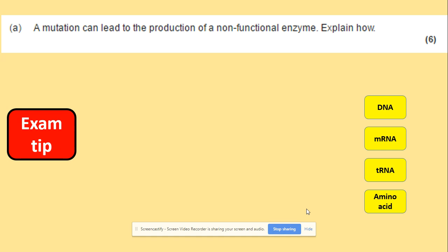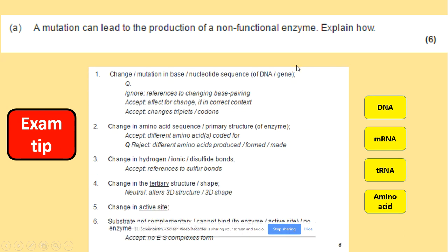We'll start with a really important question: how can a mutation lead to the production of a non-functional enzyme? This is worth six marks and it refers to aspects of protein synthesis, since enzymes are proteins. We need to refer to the pathway from DNA to amino acids, mention the mutation, and cover enzyme structure. The model answer must refer to the change in the base sequence of DNA changing the amino acid sequence, which affects the primary structure of the enzyme.